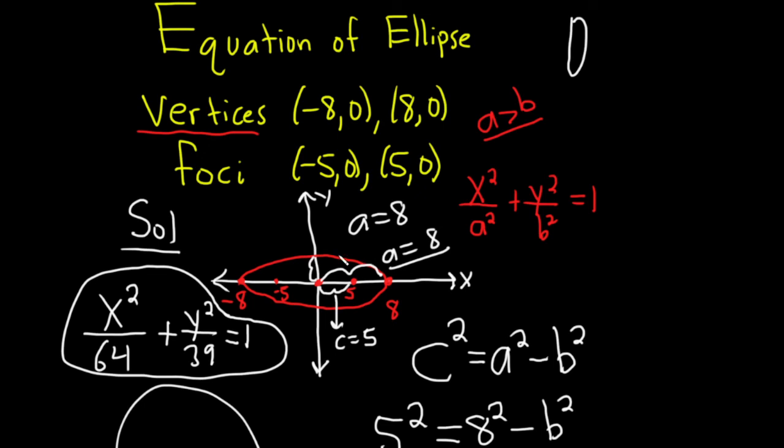So remember, if your ellipse looks like this, if the major axis is horizontal, the bigger number goes under the x. That's why I put the a here, because a is always bigger than b. If the bigger number was under the y, it would look like this, like a vertical egg. And then the a would be under the y instead of the x. I hope this has been helpful. Good luck.